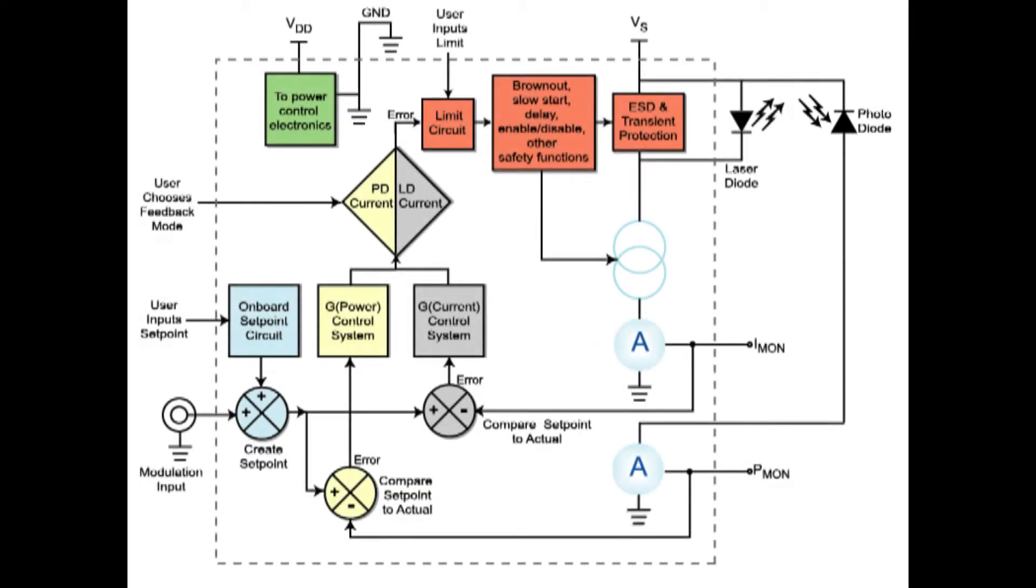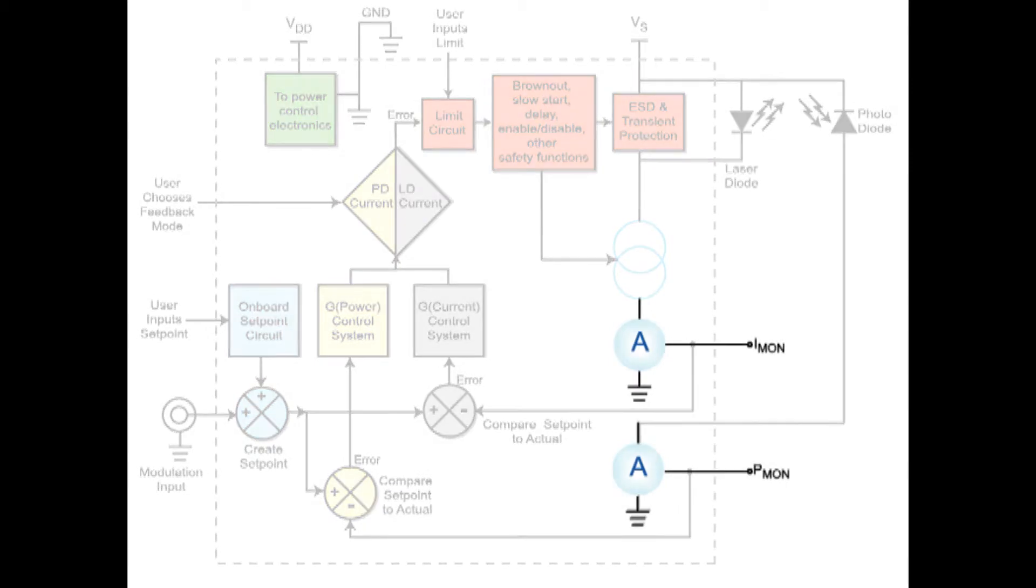Current is measured through the laser diode or photodiode and translated into a voltage. Imon represents the current through the laser diode. Pmon represents the current through the photodiode.